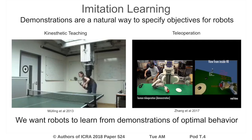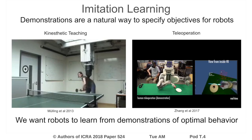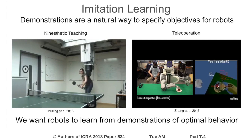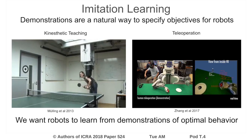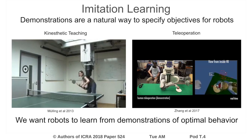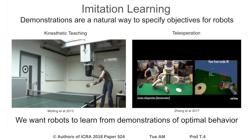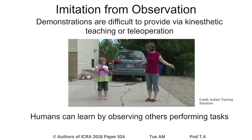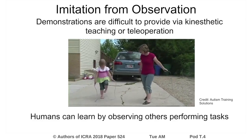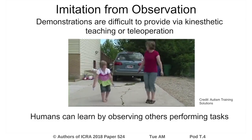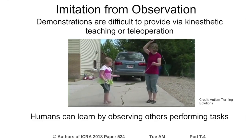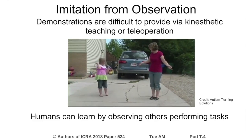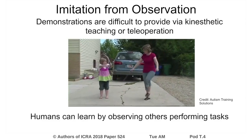Imitation learning is a natural way to provide objectives for robot learning. It is typically done by either providing demonstrations through kinesthetic teaching, where a demonstrator holds the robot arm and shows the motions, or through teleoperation using an interface such as virtual reality or joystick controllers. However, providing demonstrations using these methods can be challenging for many tasks. Humans, however, can learn directly by observing expert behavior, often provided in situations very different from their own, and are able to learn from raw video observations without knowing the actions taken by the expert being observed.